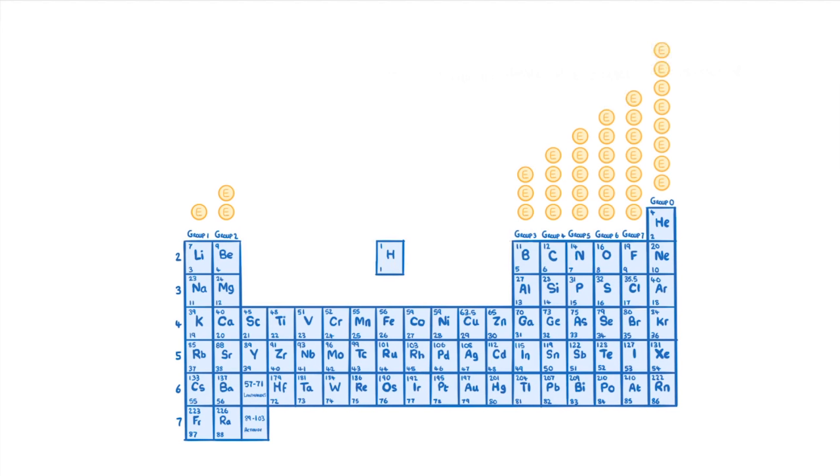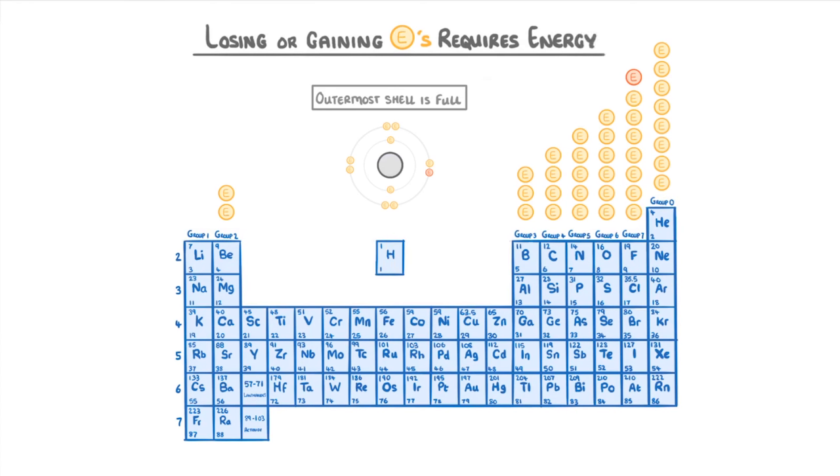In order to become stable though, atoms need to lose or gain electrons until their outermost shell is full. But losing and gaining electrons requires energy, so the atoms who only have to lose or gain one or two electrons are much more likely to do so and form ions, because it requires less energy.